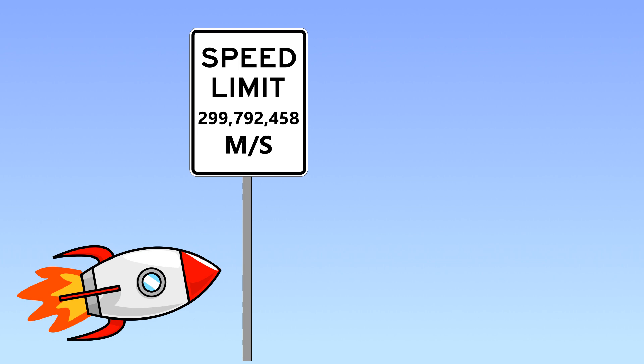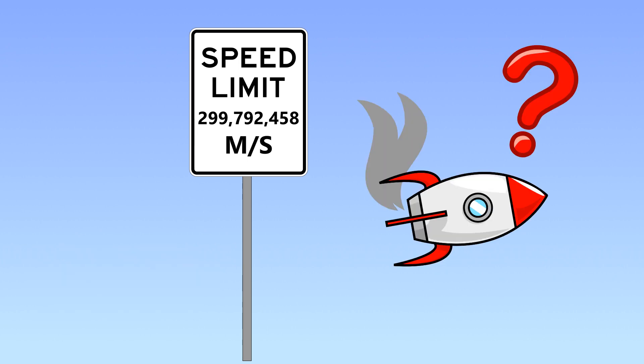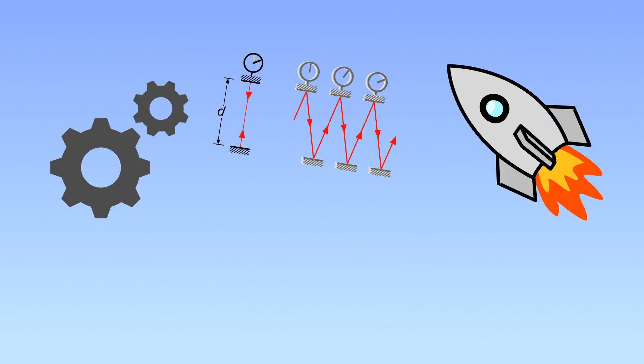Ever wonder why you can't go faster than the speed of light and why time slows down when you try? It's a fact of the universe that this is a thing that happens. However, when someone tries to explain the mechanics of it, you start hearing about light clocks and spaceships and rulers that squish. And that's all well and good about explaining what happens when you go at the speed of light, but not why it happens.